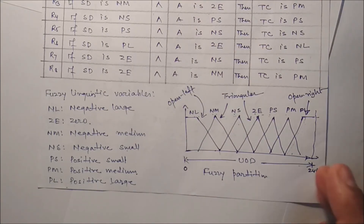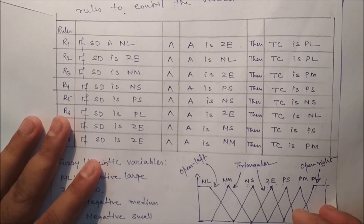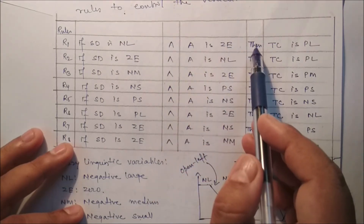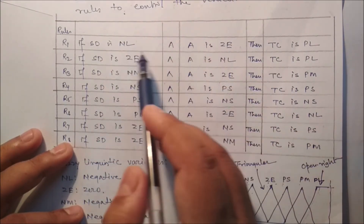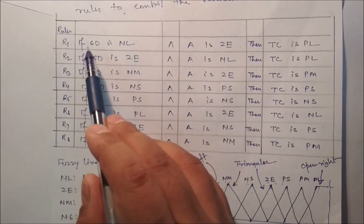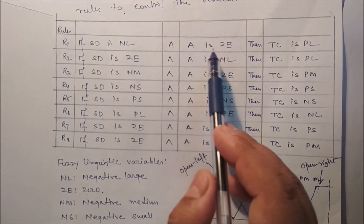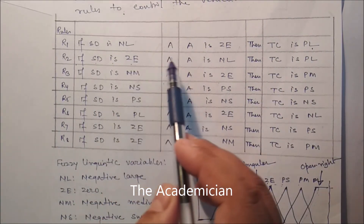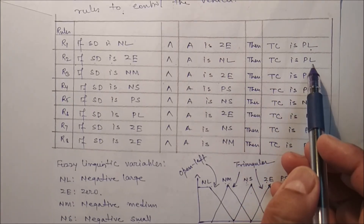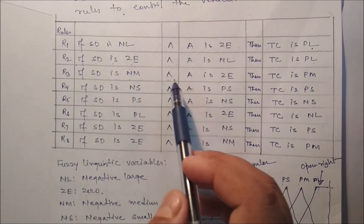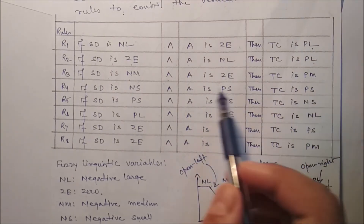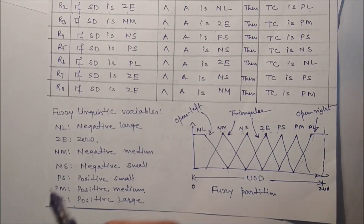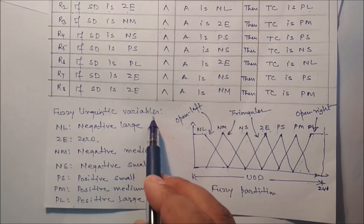There are 8 rules, R1 through R8. Each rule has an antecedent part and a consequent part, with multiple antecedents. For example: if speed difference is NL and acceleration is GE, then throttle control is PL (positive large); if speed difference is GE and acceleration is NL, then throttle control is PL; if speed difference is NM and acceleration is GE (zero), then throttle control is PM (positive medium). NL, GE, NM and similar labels are fuzzy linguistic variables, i.e., fuzzy sets.